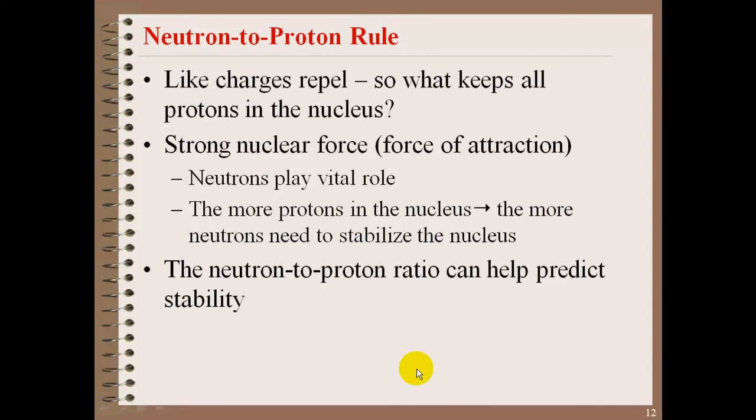With our proton rule, like charges repel each other. In our nucleus we have neutrons and protons, and the only one that has a charge is protons. So what keeps all the protons in the nucleus? Strong nuclear forces, or that force of attraction, will keep our protons together in the nucleus. The neutrons also play a role. The neutrons are kind of like the buffer that keeps the positive charges from becoming too overpowering and bursting out of the nucleus. The more protons in the nucleus, the more neutrons you need to stabilize that nucleus.